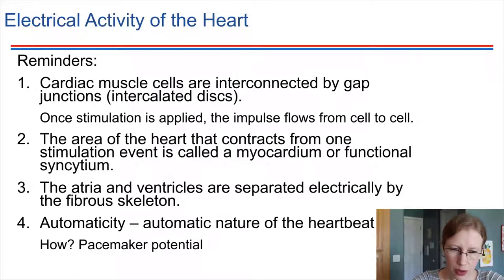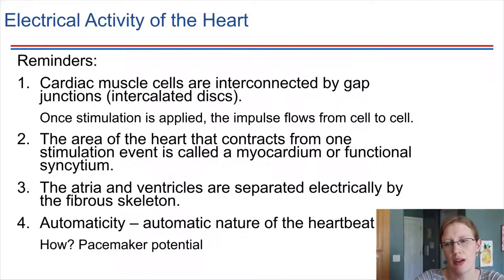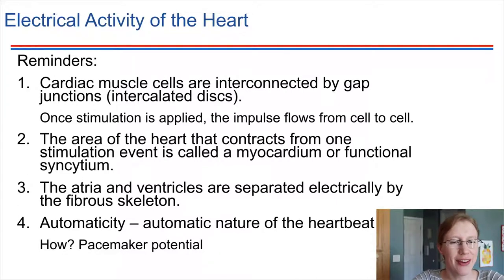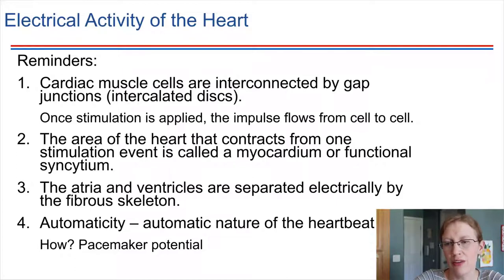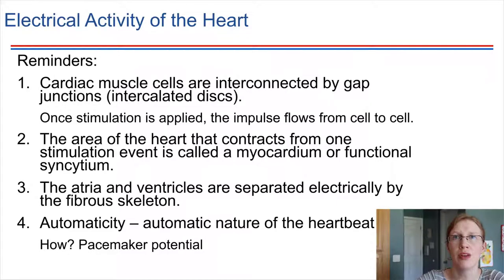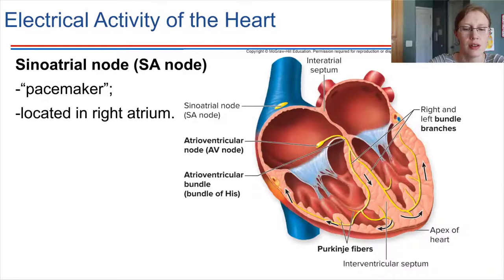In the last chapter, we mentioned the pacemaker cells of the heart — the fact that some cells can provide a pacemaker function. This provides automaticity of the heart, referring to the fact that the heart can beat automatically. It does have nerve innervations from the autonomic nervous system, but what that nervous system is doing is more just helping to control the rate. Even without nerve stimulation, the heart would still continue to beat. So let's look at those pacemaker cells.